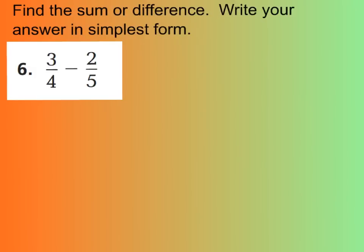For number 6 we want to find the sum or difference. Go ahead and write your answer in simplest form. If you want to pause the video and do this one on your own before I walk you through it, you can go ahead and do that to see if you're correct. We're going to do 3 fourths minus 2 fifths. And you should have listed your multiples of 4 and 5 and found the least common one would be 20. Because you have 4, 8, 12, 16, 20. And for 5 you have 5, 10, 15, 20.